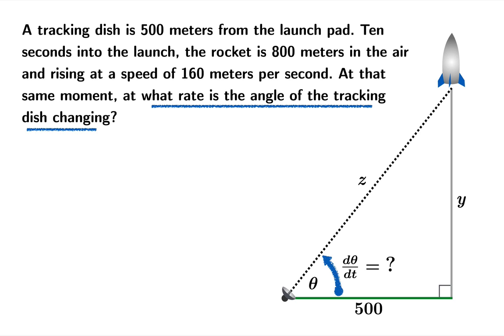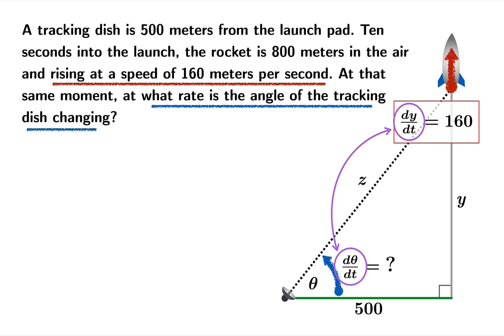One of the key facts we have in the problem is that at the moment in question, the rocket is rising at a speed of 160 meters per second. In other words, dy/dt is 160. It looks like we should be searching for a relationship between dy/dt and d theta/dt. Of course, the easiest way to do that would be to find a relationship between y and theta. There's a pretty clear one. The tangent of theta is equal to y over 500.